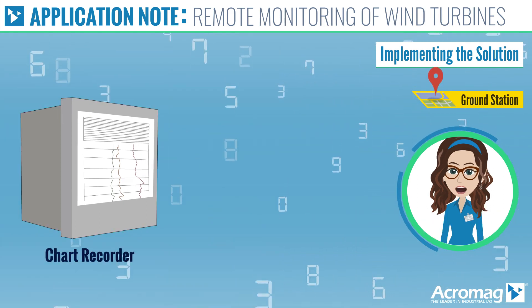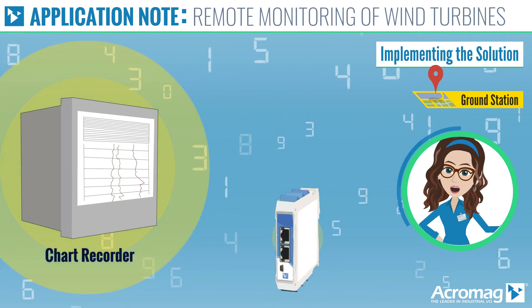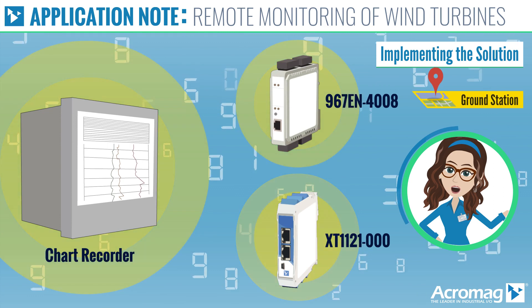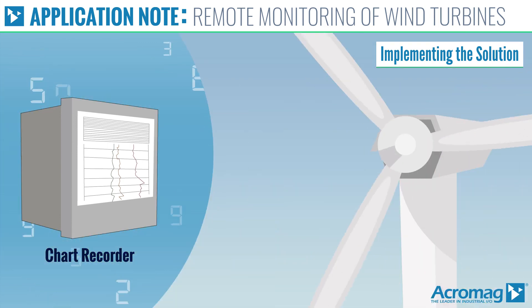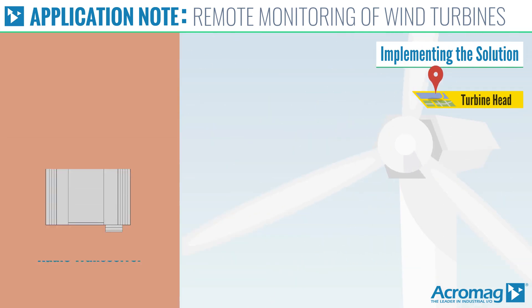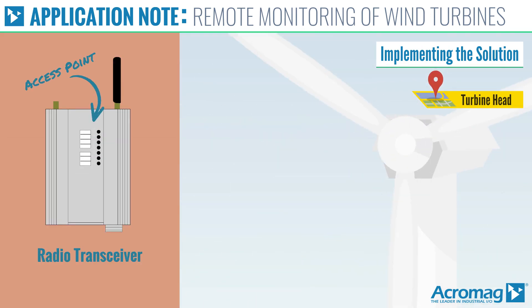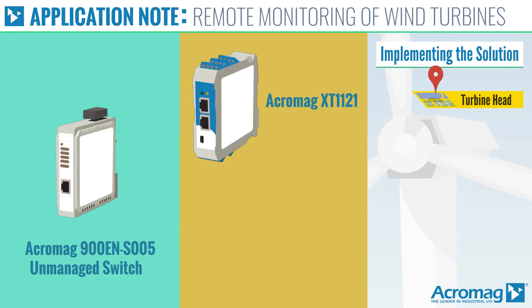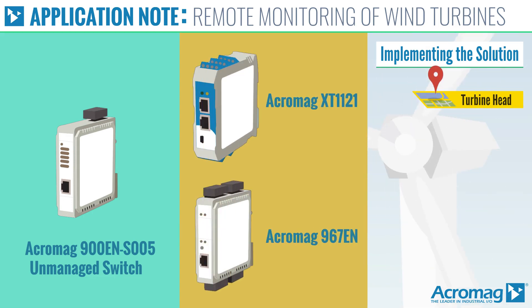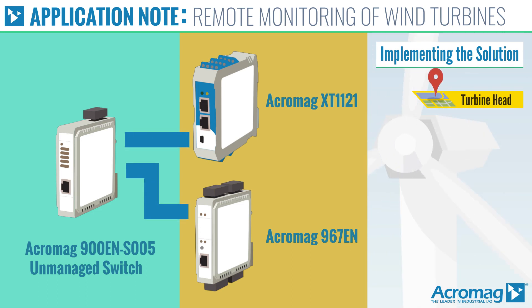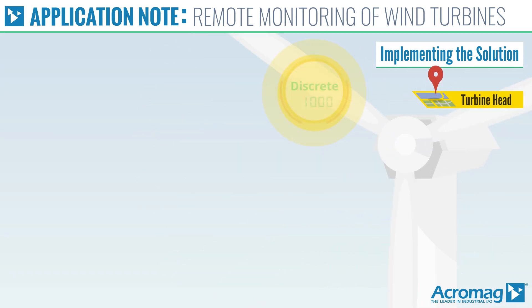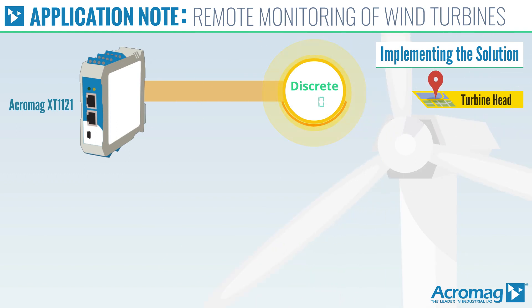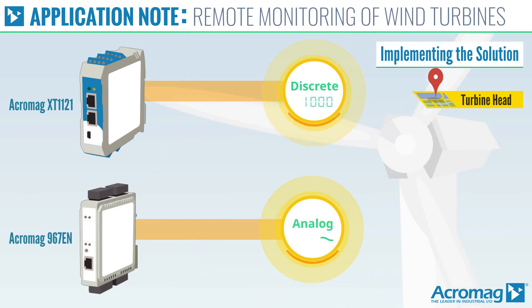Configure the chart recorder to communicate to the XT-1121 and 967-EN Acromag Modbus server modules. At the wind turbine head, configure the radio transceiver as an access point and connect the ethernet port to one of the ports on a 900-EN unmanaged switch. Connect the XT-1121 discrete I/O module and the 967-EN analog current input module to two of the other ports on the 900-EN switch. Finally, connect the discrete signals to the XT-1121 inputs and the analog current signals to the 967-EN inputs.